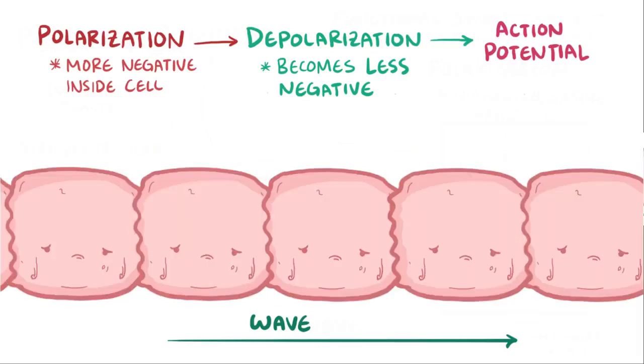Each one of these depolarization waves causes heart muscle contraction. So the rate at which depolarization waves ripple through the heart actually sets the heart rate. This means that if depolarization waves are going through about once per second, then your heart is beating once per second, or 60 times a minute.